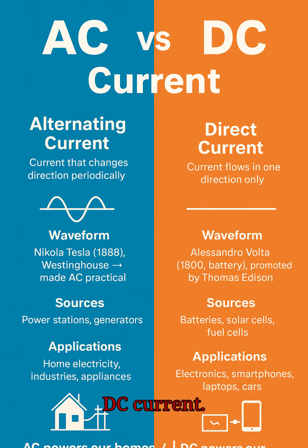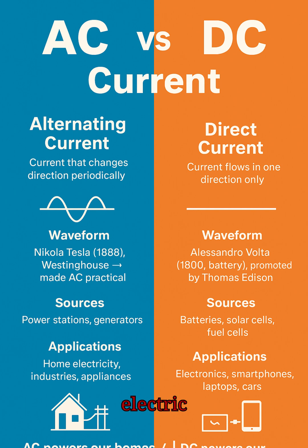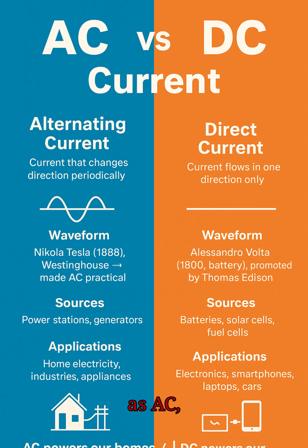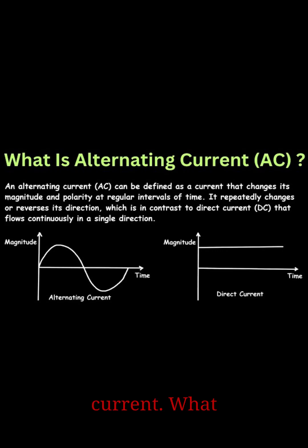AC versus DC current. What is electric current? Electric current is the flow of electric charge, usually electrons, through a conductor like a wire. Depending on how the electrons flow, current is classified as AC, alternating current, or DC, direct current.